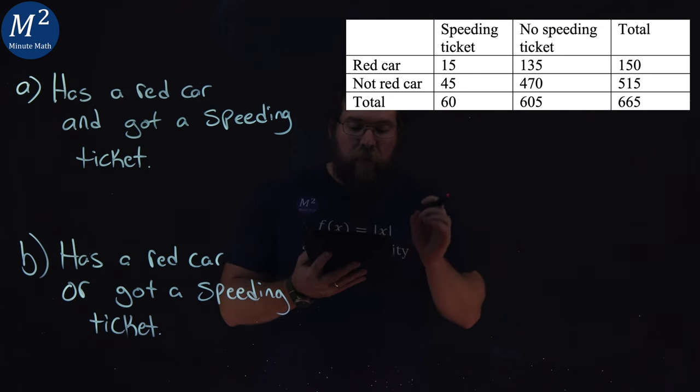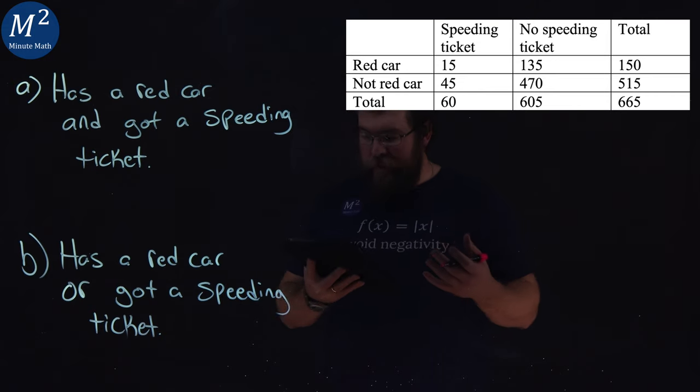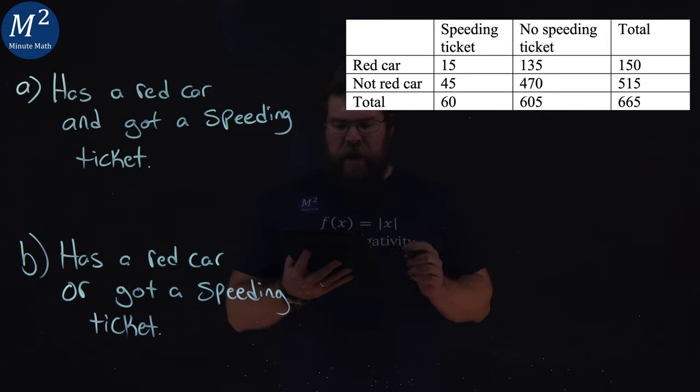This table shows the number of survey objects who have received and not received a speeding ticket in the last year and the color of their car.